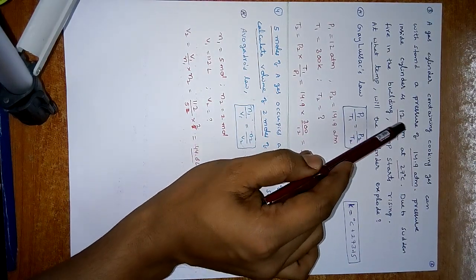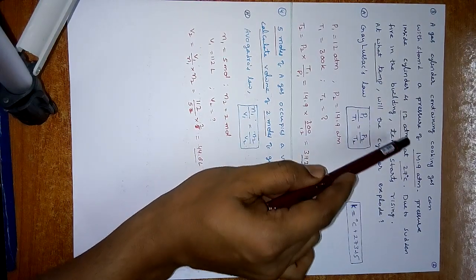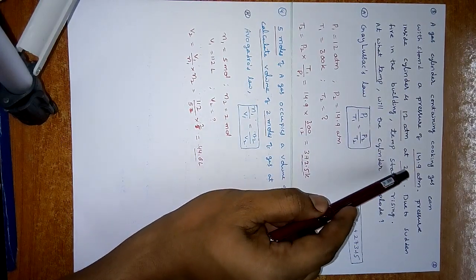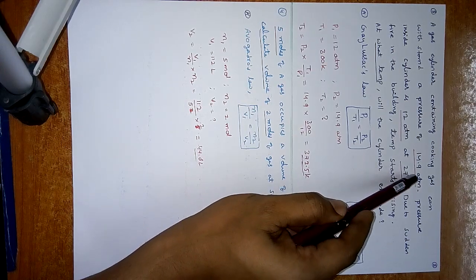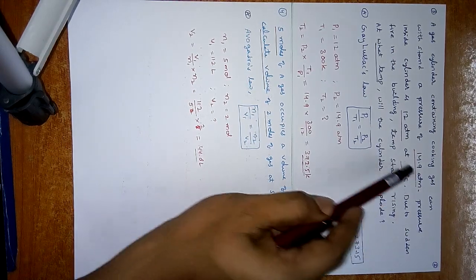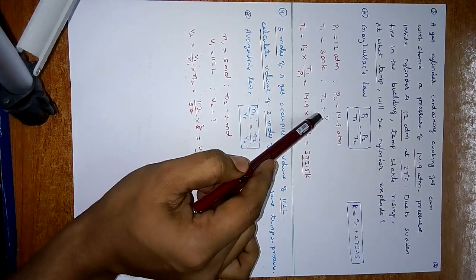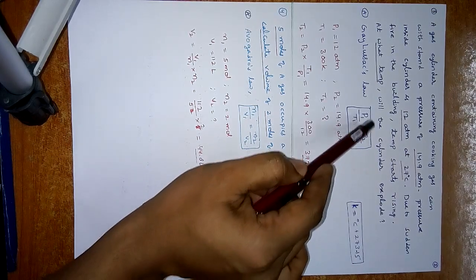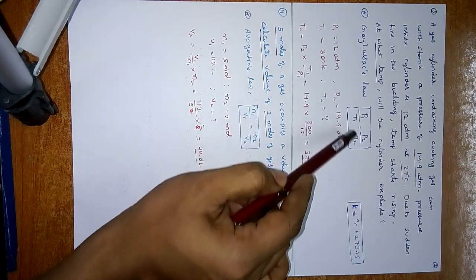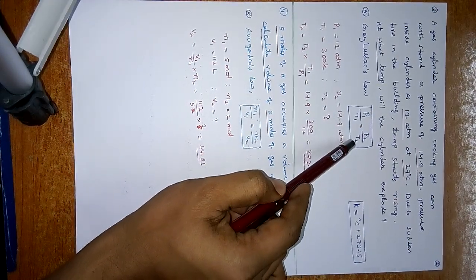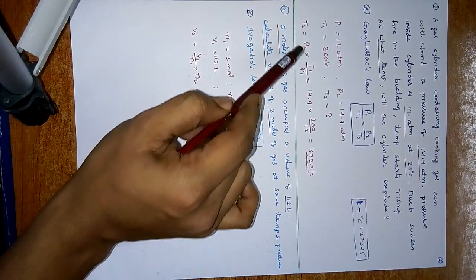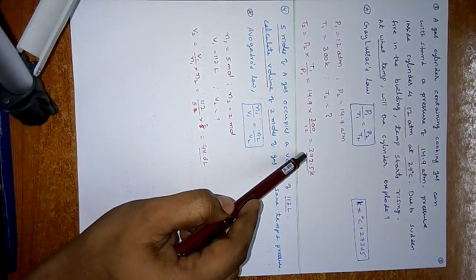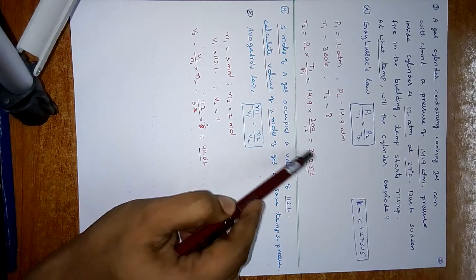Here P1 = 12 atmospheres, T1 = 27°C = 300 K, and P2 = 14.9 atmospheres. We have to find T2. We know three terms, so if you substitute these three values, you will get T2 = 372.5 K.